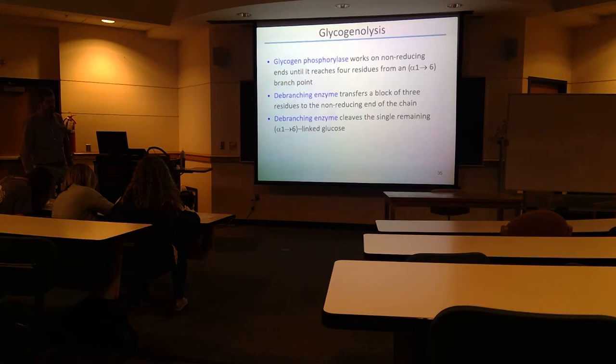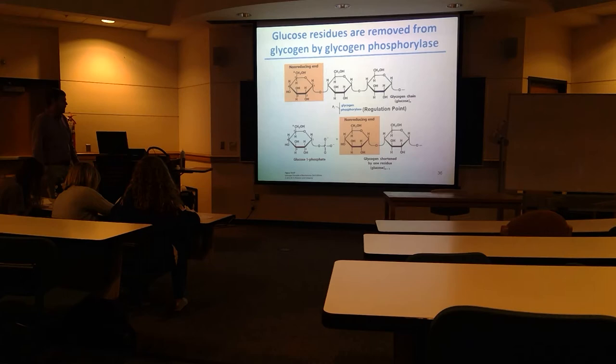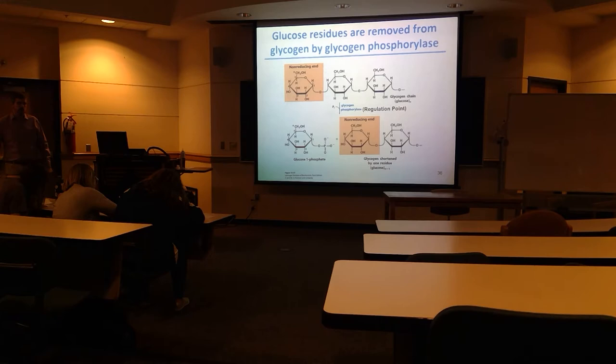It removes one glucose at a time. Glycogen phosphorylase is the regulation point. If you turn that off, you don't have any breakdown of glycogen. Keep that in mind as we explain the process.